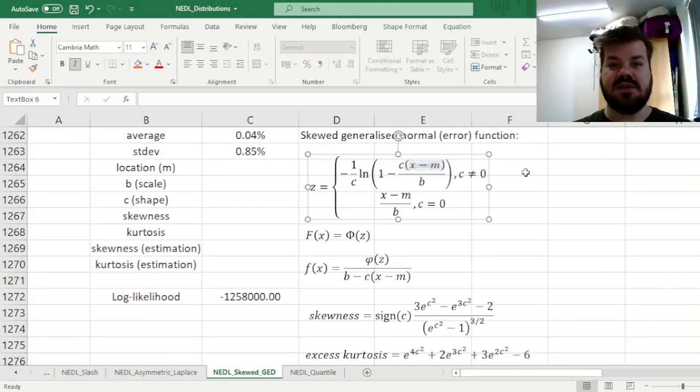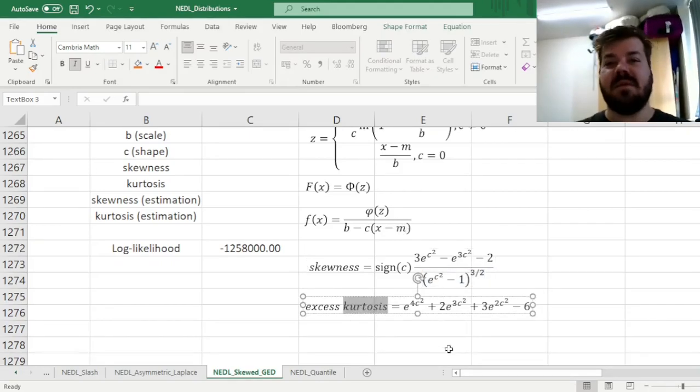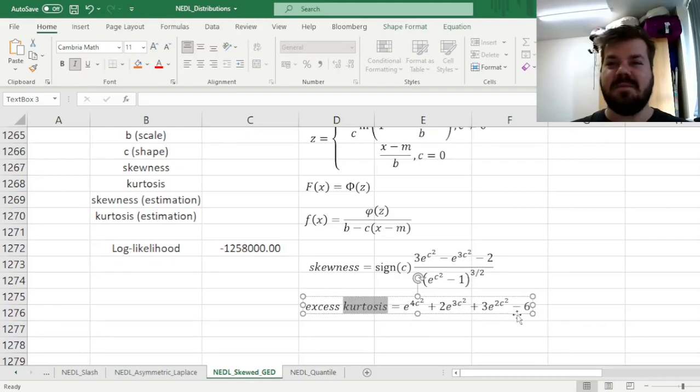And that allows us to achieve a wide range of different skewed distributions, left skewed distributions for positive values of C, and right skewed distributions for the negative value of C. And in terms of theoretical skewness and kurtosis, those can be calculated by just using the C parameter, and that's it. The skewness depends on the sign of our C parameter and this expression over here, that involves just taking the exponent of squared shape parameter C.